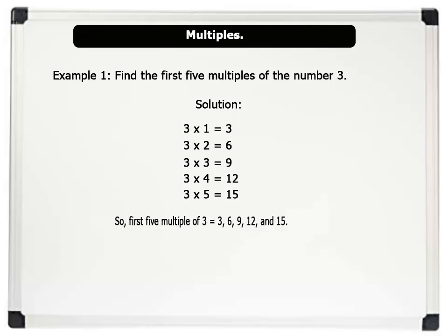So, the first 5 multiples of the number 3 equals 3, 6, 9, 12, and 15. That's brilliant.